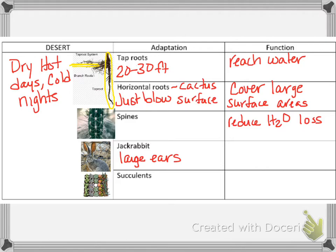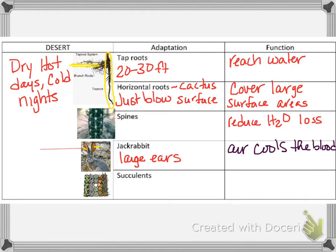The jackrabbit's ears, as you can see, are super big. The blood vessels in the ears — when air hits those large ears, it's able to cool them down. It cools the blood, and then that circulates through their body and helps cool the rabbit down. Because it's hot in the desert, the super large ears help keep the rabbit cool.